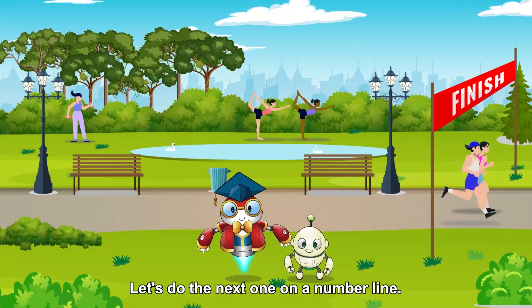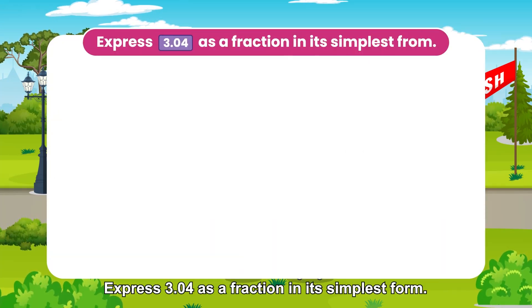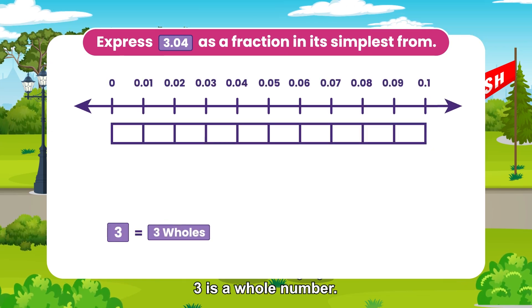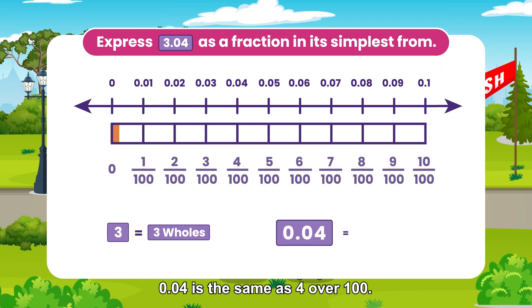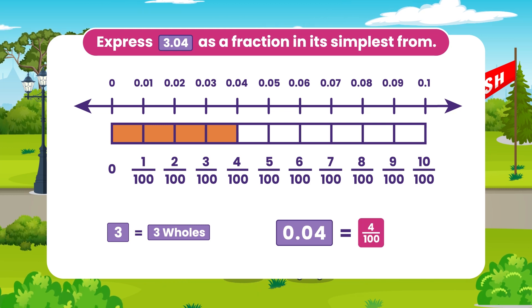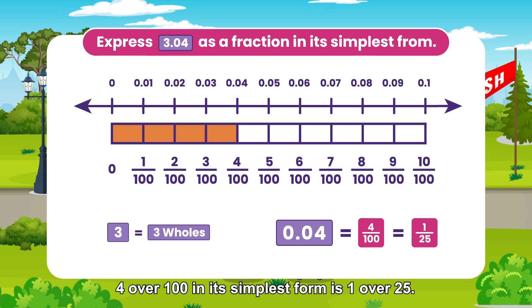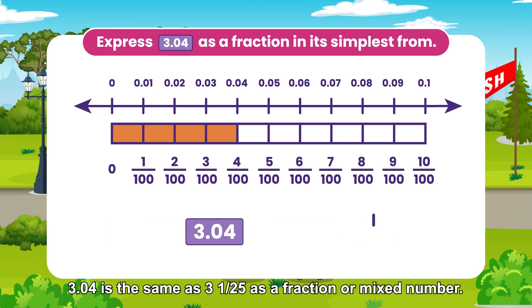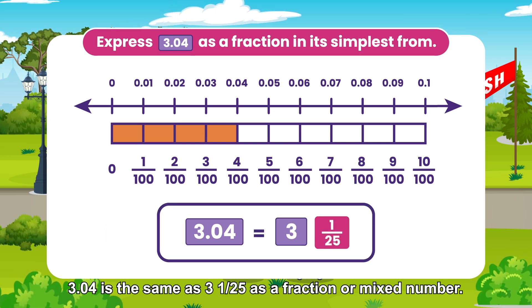Let's do the next one on a number line. Express 3.04 as a fraction in its simplest form. 3 is a whole number. 0.04 is the same as 4 over 100. 4 over 100 in its simplest form is 1 over 25. Hence, 3.04 is the same as 3 and 1 25th as a fraction or mixed number.